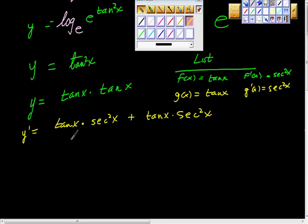You can write y prime is equal to tan x times the quantity secant squared x plus secant squared x. It's fine with me. In this particular problem, though, what if you were asked to evaluate this thing at a specific level?